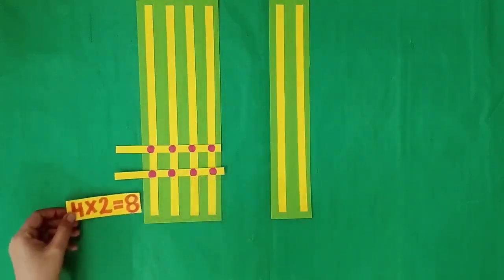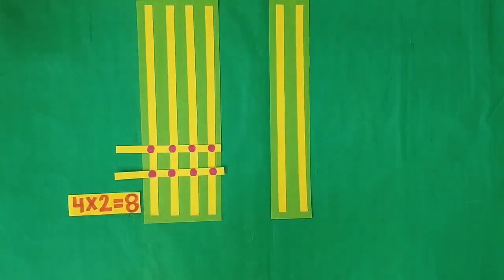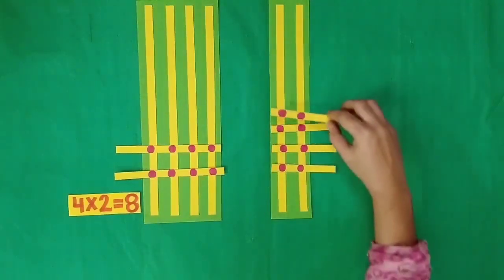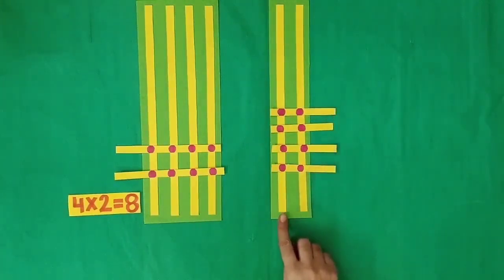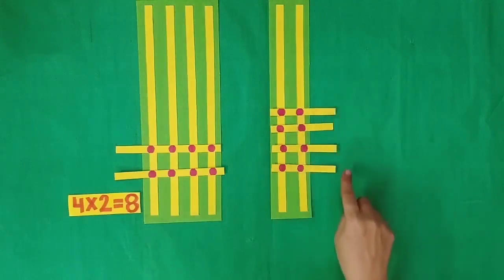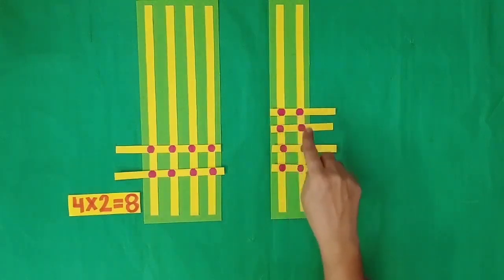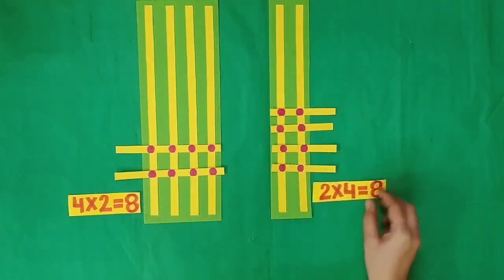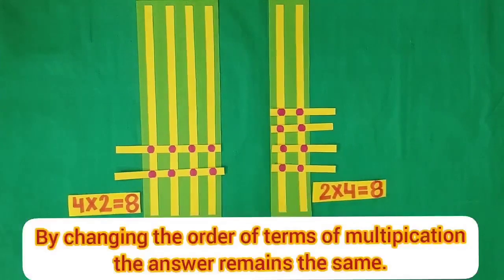It means 4 multiplied by 2 is equal to 8. Now I am placing 1 horizontal paper strip and 4 horizontal paper strips on these 2 vertical paper strips. We have 8 points of intersection. It means 2 multiplied by 4 is equal to 8. By changing the order of the terms of multiplication, the answer remains the same.